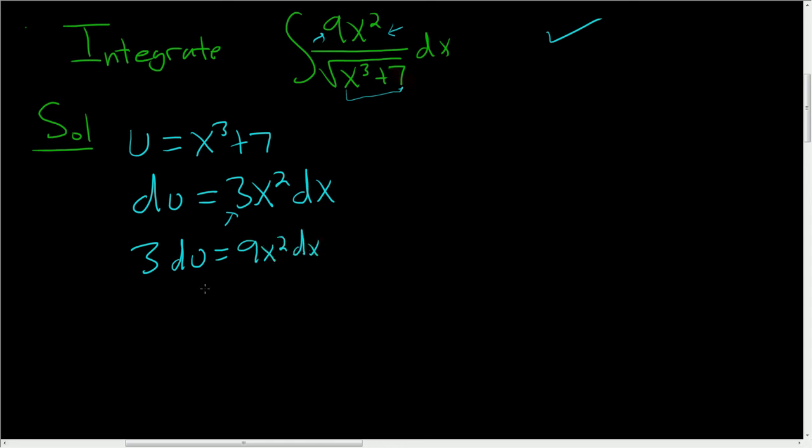All right, now we're ready to go. We're ready to make our substitution. So 9x squared dx is right here, and it's also down here. That's equal to 3 du, so we'll have 3 du over the square root of u, because u is x cubed plus 7.